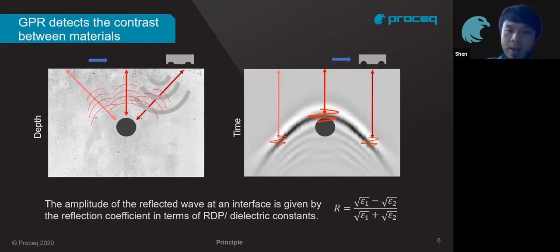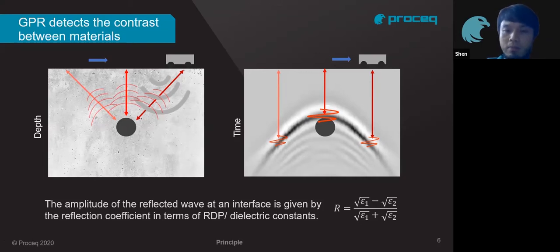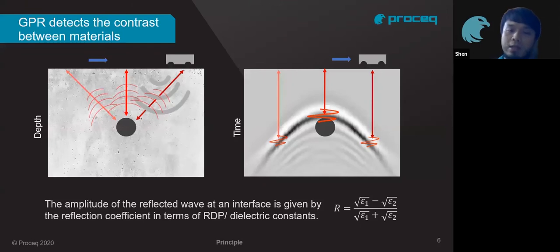GPR detects the reflected signal based on amplitude. The amplitude is very dependent on the dielectric constant between the materials — for example, concrete and metal. Because GPR is very sensitive to metal, you get a very good signal. Whereas if the embedded material is something like a PVC pipe, you may not get as strong a signal as with metallic objects.